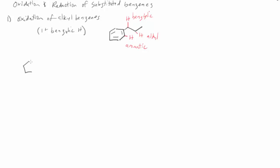If I take toluene, which is just methylbenzene, and react that with a strong oxidizing agent like potassium permanganate, KMnO4, what it does is it oxidizes that whole side chain off to a carboxylic acid.